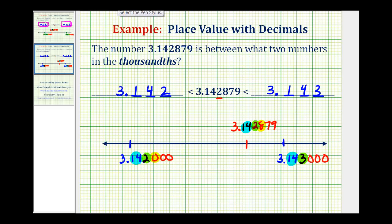we do want to make sure that we only include the thousandths place value. So the given number is greater than 3.142 and less than 3.143, which means it's between these two numbers to the thousandths place value.